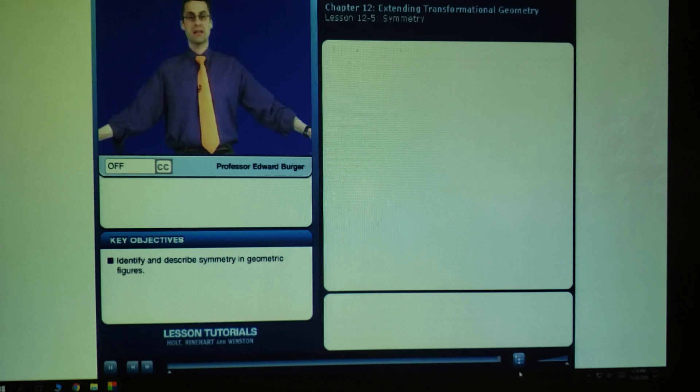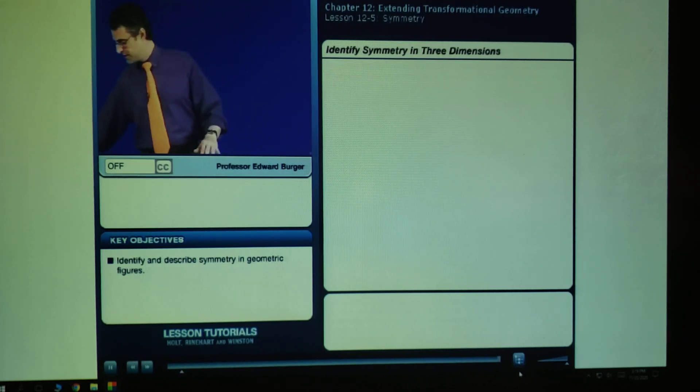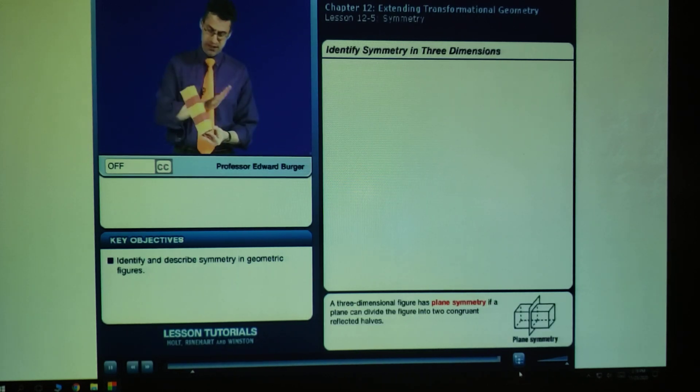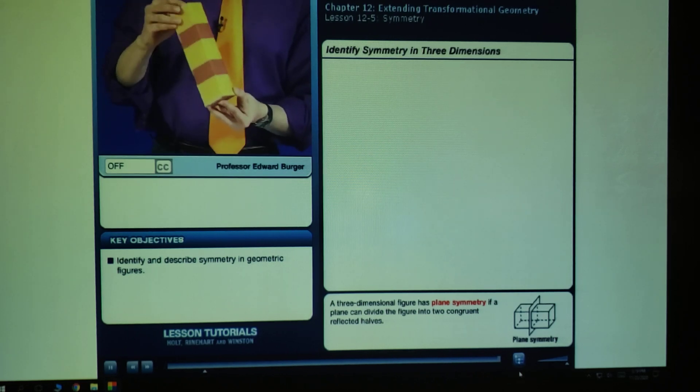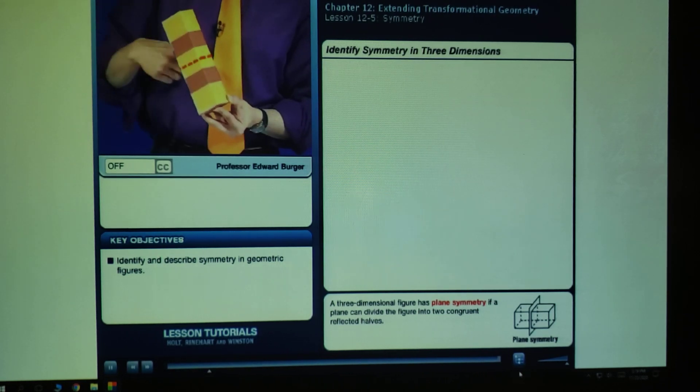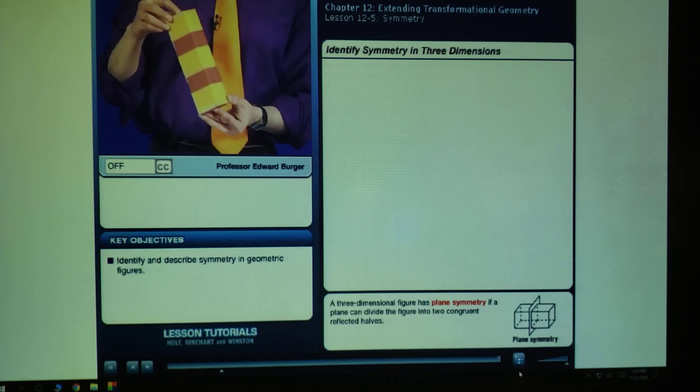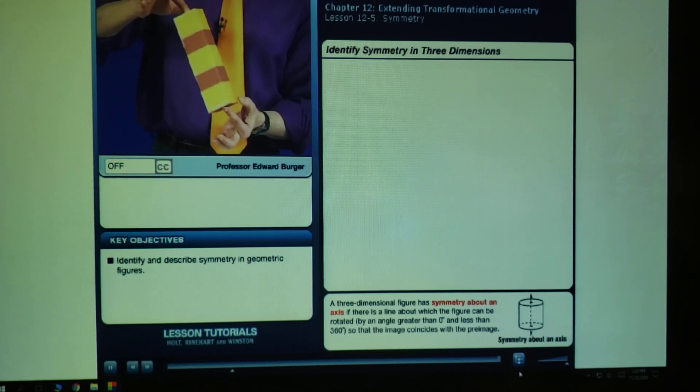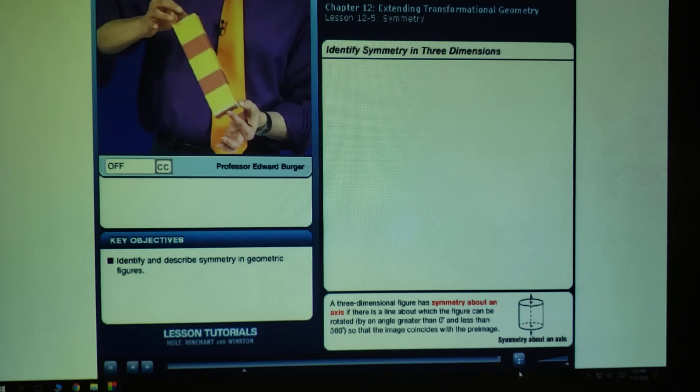If we now move from the plane to three-dimensional space, we can look at solids and see various types of symmetry within solids. Let me show you a couple types. One is called plane symmetry. Plane symmetry means that I can find a plane that actually cuts the object into two pieces which are congruent but reflected images of each other. For example, here, if I cut this right in half, you can see that the top and the bottom would be reflections of each other.